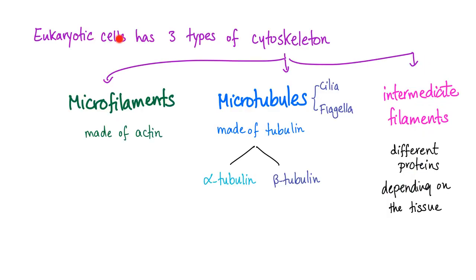Ectoplasm. Eukaryotic cells, like you and me, have three types of cytoskeletons: microfilaments, microtubules, and intermediate filaments. Microfilaments are made of actin. Microtubules are made of tubulin — we have two types: alpha tubulin and beta tubulin. Intermediate filaments are made of different proteins depending on the tissue. Don't forget: microtubules are essential to form cilia and flagella.